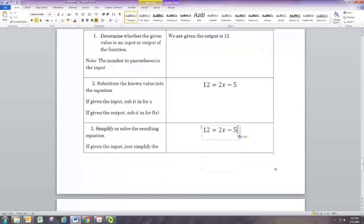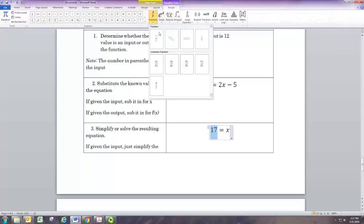We know how to solve a linear equation. We're just going to add 5 to both sides, and 12 plus 5 will give us 17. Then divide both sides by 2, and we'll get 17 divided by 2.